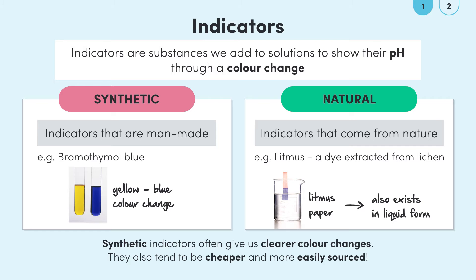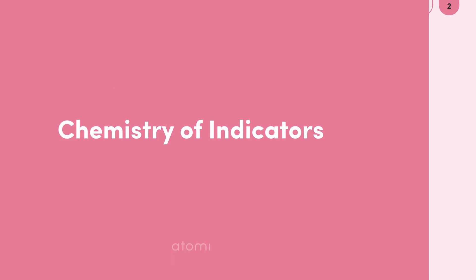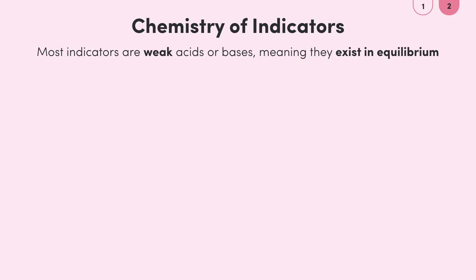Now that we've learned what indicators are it's time to discuss how indicators actually work. Most indicators are actually weak acids or bases themselves meaning they exist in an equilibrium. This chemical equilibrium can be written as HIn reacting to form a hydrogen ion and indicator ion. In here in this equilibrium stands for indicator.